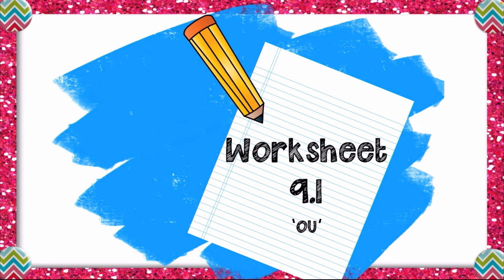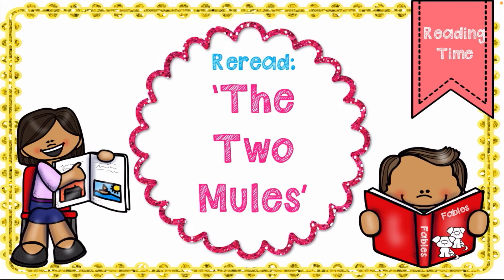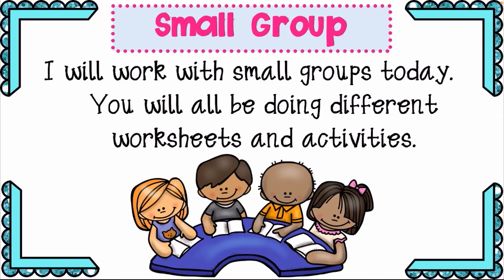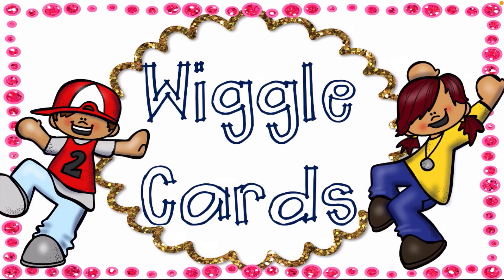Now I want you to complete the activity on your worksheet 9.1. Today you are going to be reading 'The Two Moles' — we've read it before in our last class. Read it as a small group, read it to your brother, read it to your sister, ask questions, and answer questions for yourself. You'll boost your reading fluency! Now the fun part — the wiggle card.